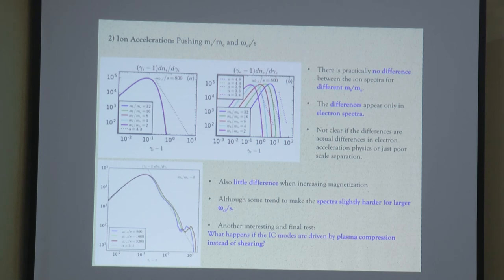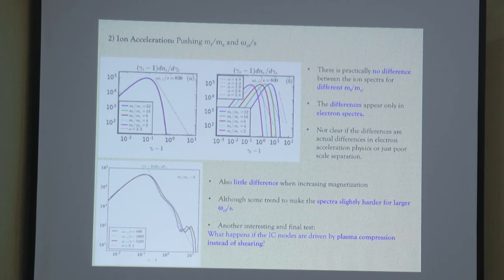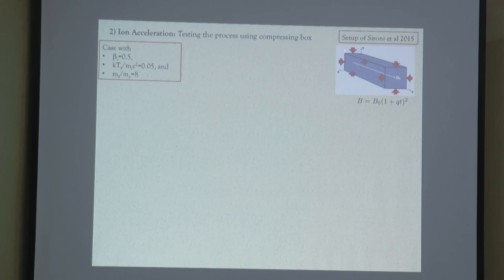The next question was whether the acceleration driven by the ion cyclotron instability depends on how we drive the instability. We were driving it via shear motion amplifying the magnetic field, but the magnetic field could also be amplified by compressing the plasma, which would also grow the pressure anisotropy and trigger these instabilities. We tested this using the setup of Sironi et al. 2015, with exactly the same parameters: beta of 0.5 and ion temperature of 0.05 times rest mass energy.